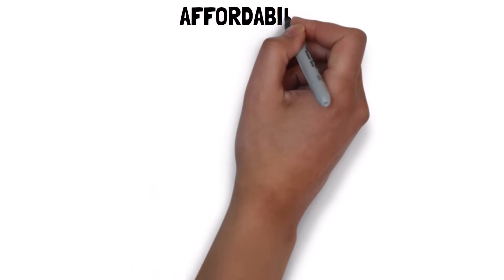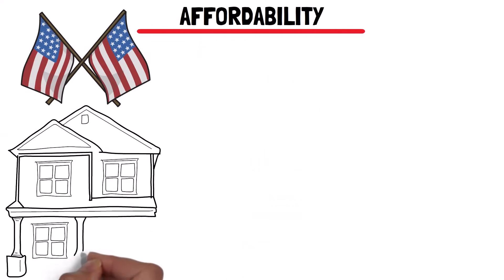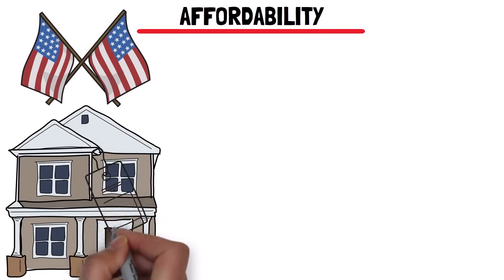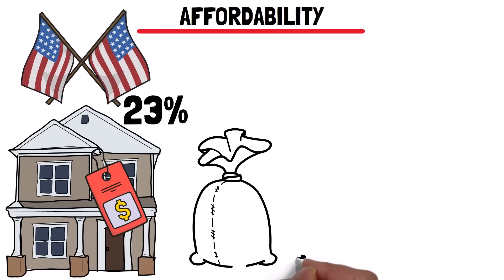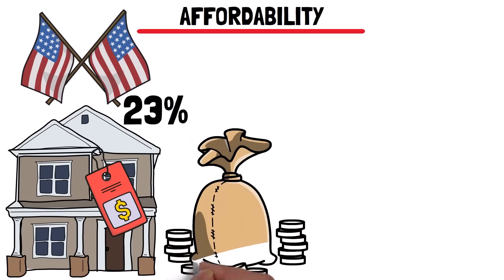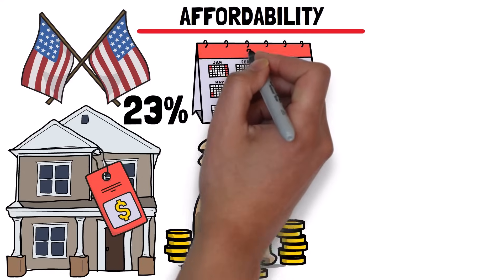Let's talk about the first issue, affordability. Right now, not many Americans can afford to buy a home. Only 23% of the homes for sale are within reach of the average earner. In a balanced market, about 50% of homes are affordable. We haven't seen numbers like this since 2006.